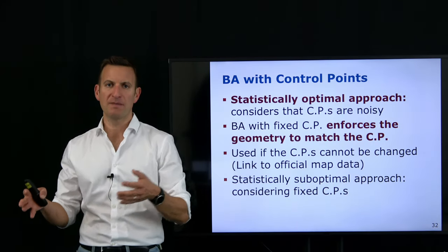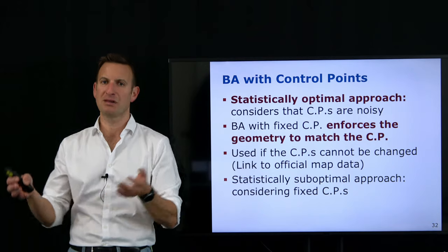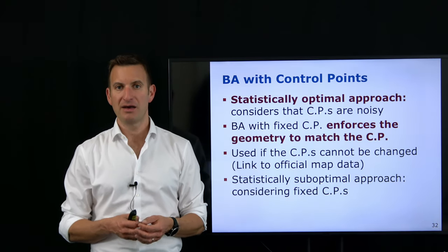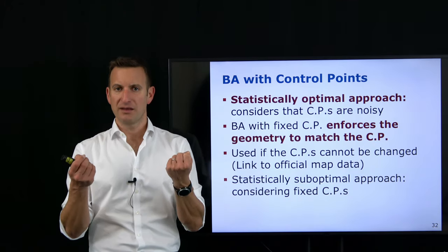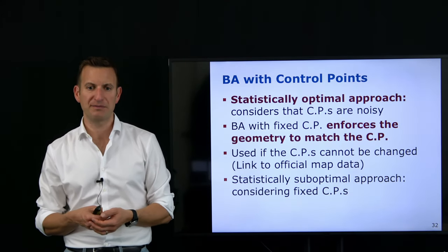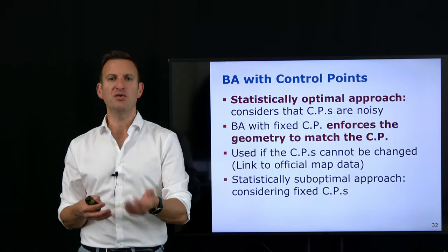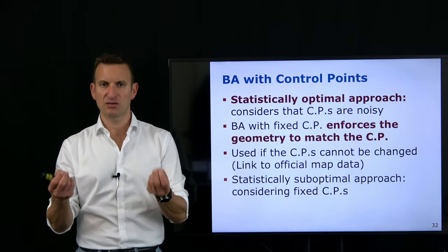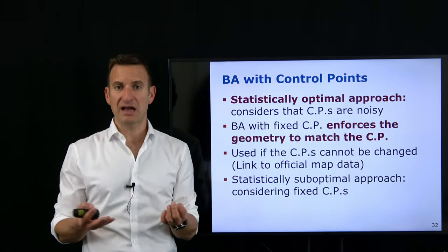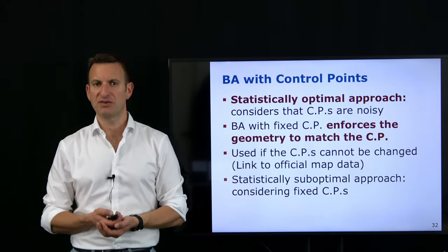If you want your model to be in line with an external official map, you want to fix your control points to enforce that geometry — this is then a statistically suboptimal approach. It depends on where your data comes from and what you want to do with the resulting model: whether you want to enforce the geometry or also potentially correct mistakes in the control points.